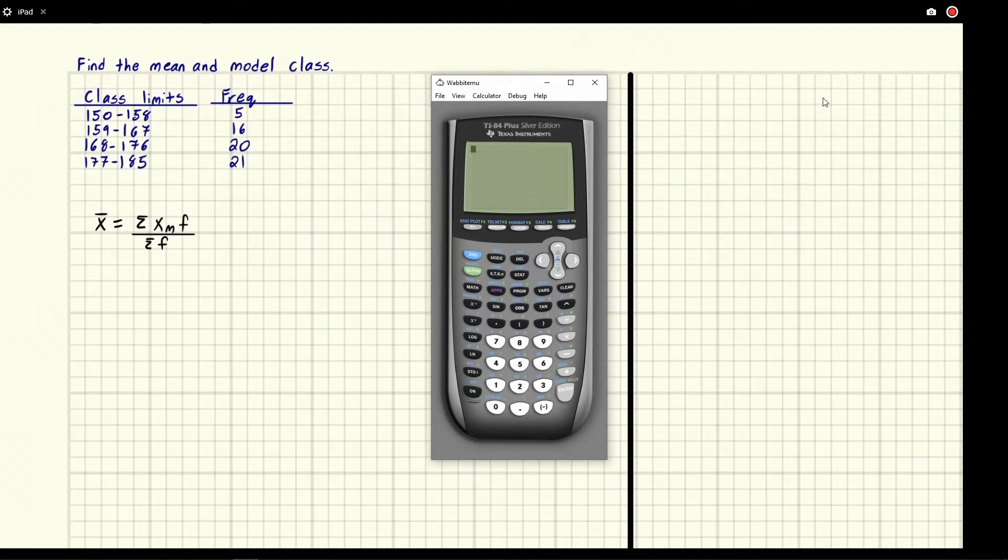So first off we need our midpoint. So we're going to have a midpoint column. There's two ways to do this. There's the manual way and then there is the way to do it with the calculator. So I'm going to show you both ways but we still need the midpoints for both of them. So the midpoint is the middle of these two and to get the middle we're going to add the two numbers and then divide by two.